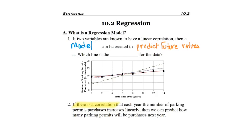If there is a correlation, assuming linear correlation, that each year the number of parking permits that are purchased increases linearly, then we can actually predict how many parking permits will be purchased next year, how many we need to make, how many parking spaces we need to have.